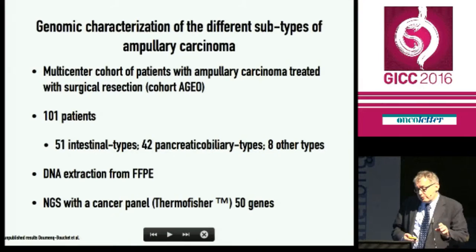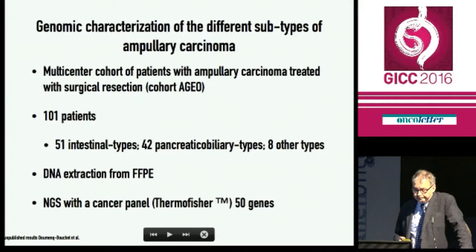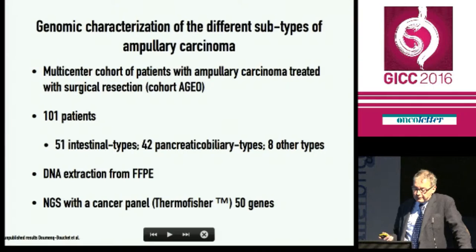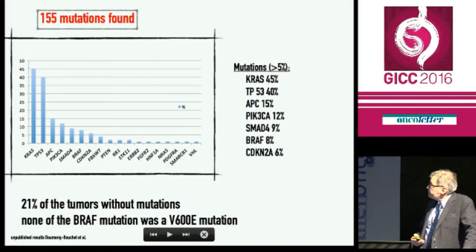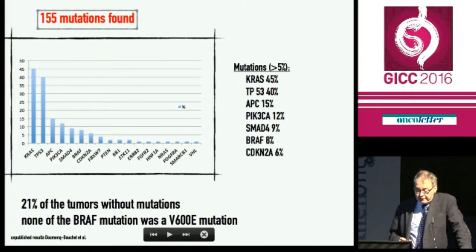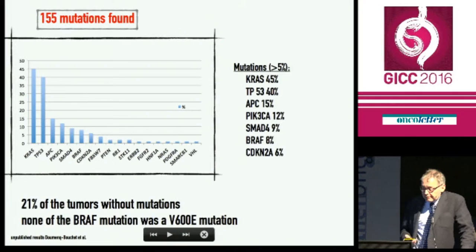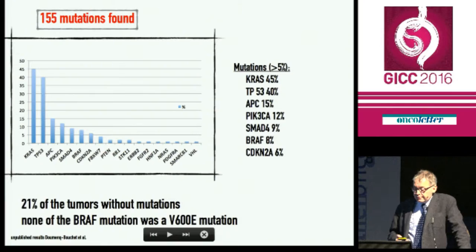We decided in the lab to study a series of 100 patients: 51 intestinal types and 42 pancreaticobiliary types. We extracted DNA from FFPE samples, enriched in tumor cells, and performed a cancer panel from Thermo Fisher of 50 genes, sequencing them by next-generation sequencing. We found 155 mutations among the 100 tumors. The most frequent mutation is KRAS, with 45% of tumors harboring a KRAS mutation. TP53 40%, APC 15%, PI3-kinase 12%, SMAD4 9%, BRAF 8%, and CDKN2A 6%. There is 21% of tumors without mutation among the 50 genes screened.